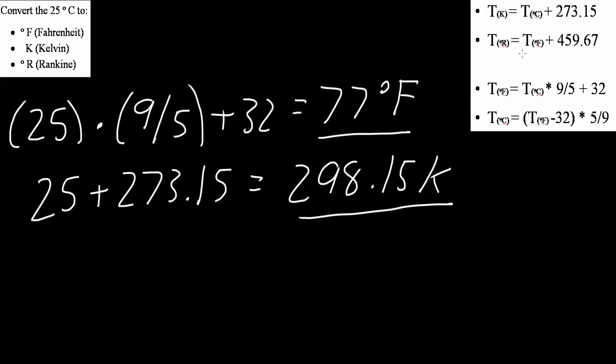So Rankine is equal to Fahrenheit plus 459.67. Fahrenheit was 77, so 77 plus 459.67, and that's going to equal 536.67 Rankine. And that's all we need to do for these three problems.